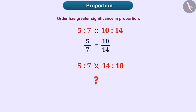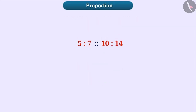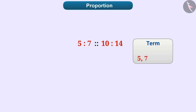Can you tell the reason for this? This is because 5 by 7 is not equal to 14 by 10. Therefore, the quantities should be expressed in the proper order of proportion. Each quantity expressed in proportion is called a term. So in the given proportion, 5 is to 7 is proportionate to 10 is to 14, and 5, 7, 10, and 14 are terms.